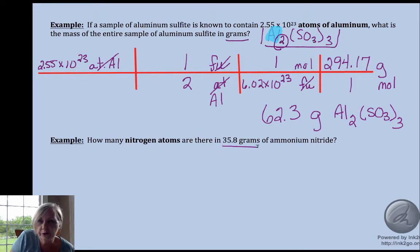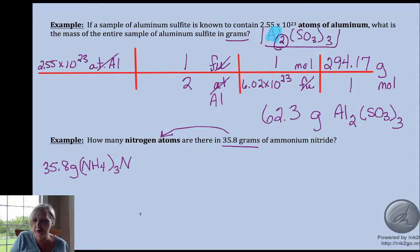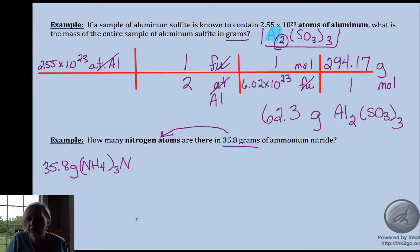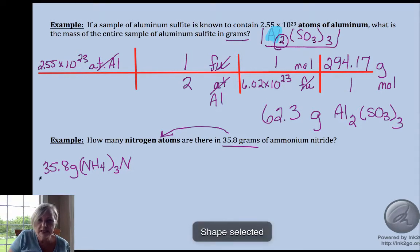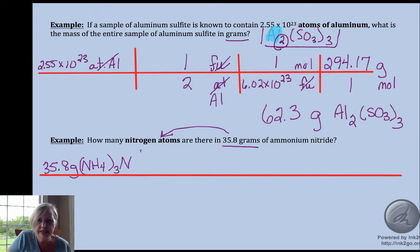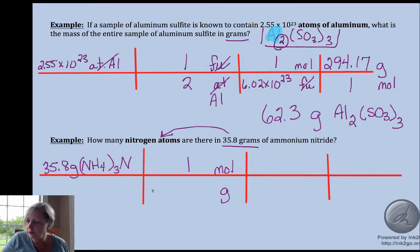You might want to verify that number just to make sure a) that I did my math right but b) more importantly that you know how to calculate these. If I didn't have a finger slip on my calculator, I've got 62.3 grams of aluminum sulfite. Okay, this time we're going from grams to atoms within.